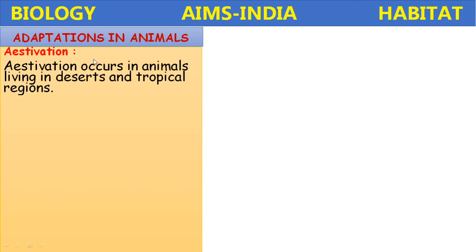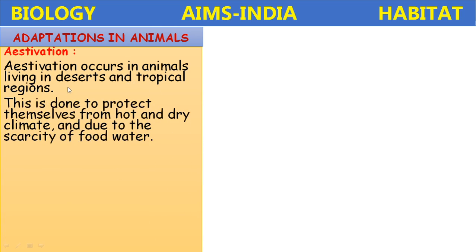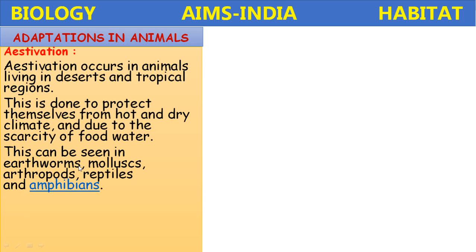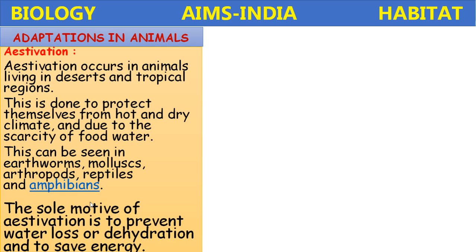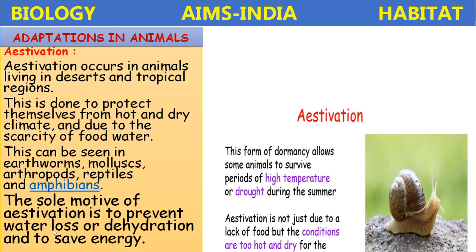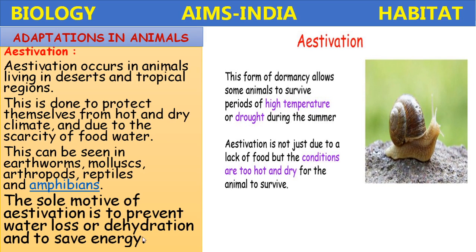Next is estivation, also called summer sleep. Estivation occurs in animals living in deserts and tropical regions under very hot conditions. It is done to protect themselves from hot and dry climate and due to scarcity of food and water. This can be seen in earthworms, mollusks, arthropods, reptiles, and amphibians. The sole motive of estivation is to prevent water loss or dehydration and to save energy.